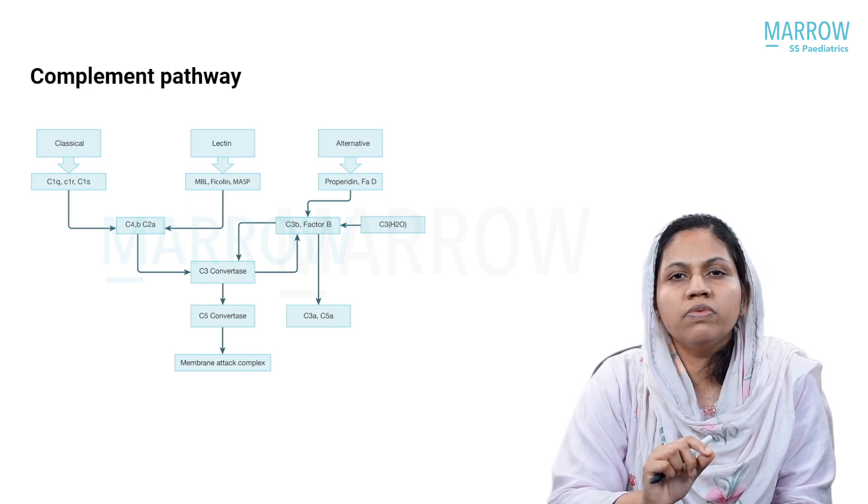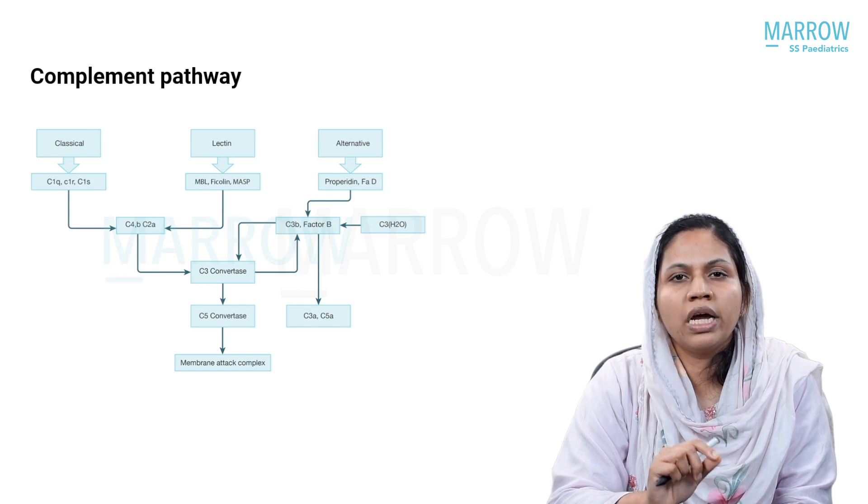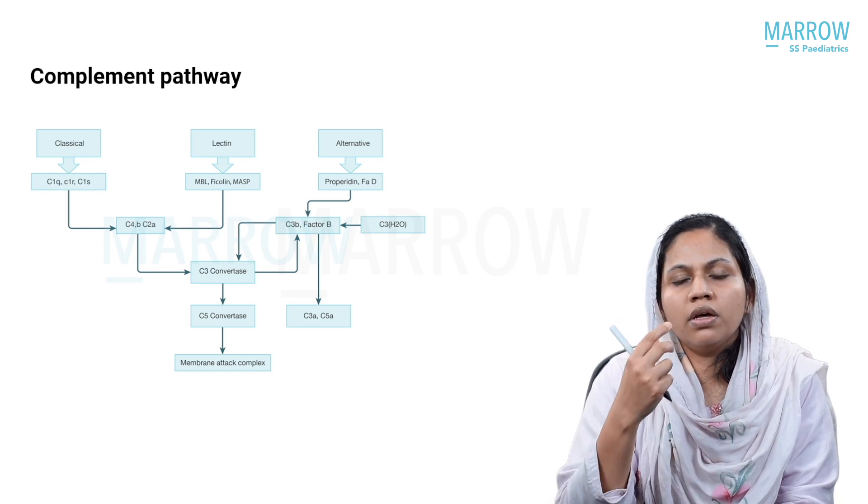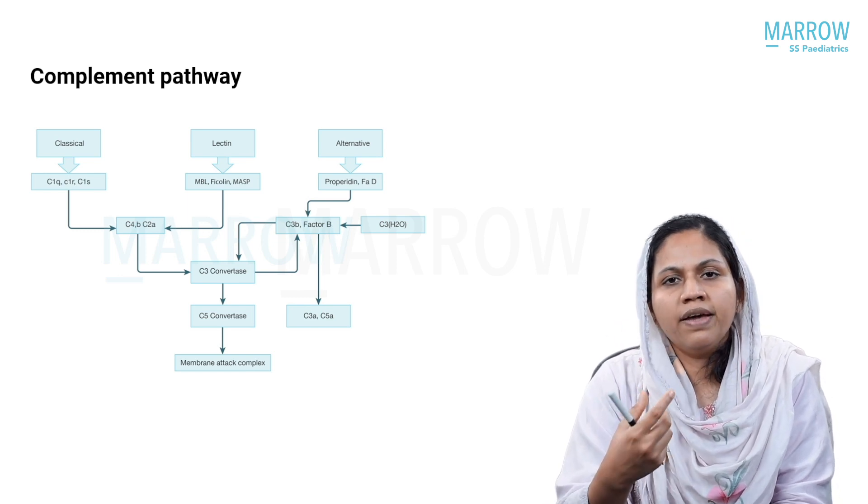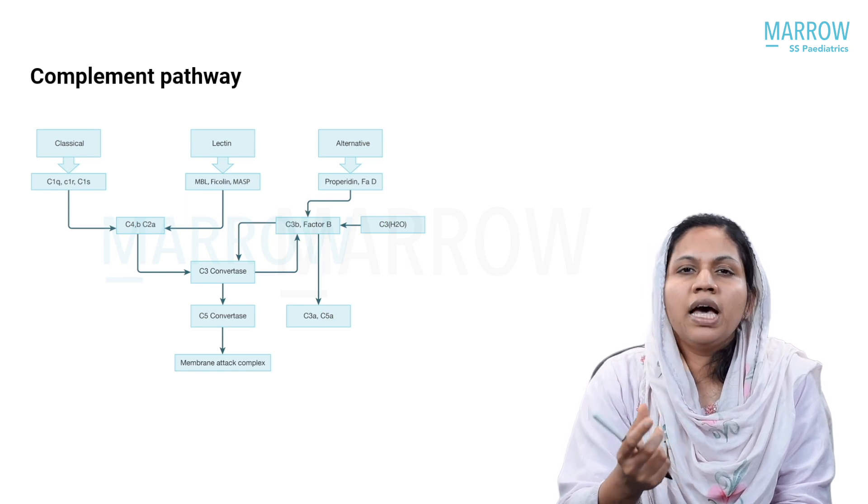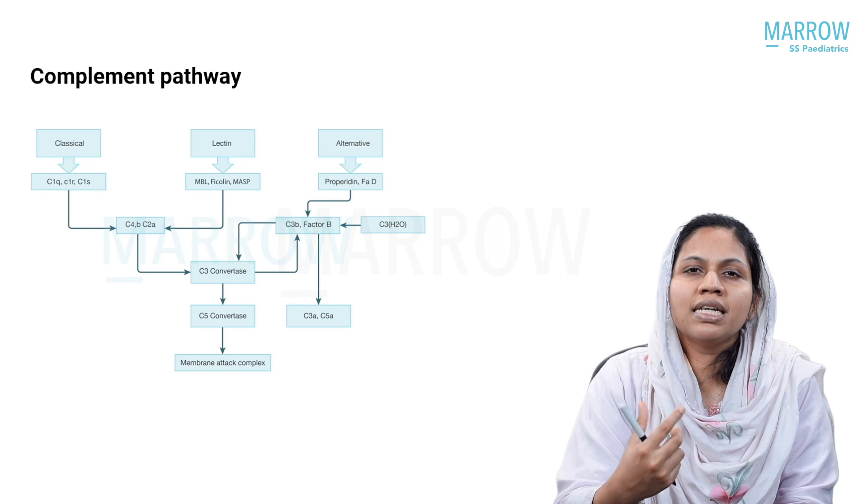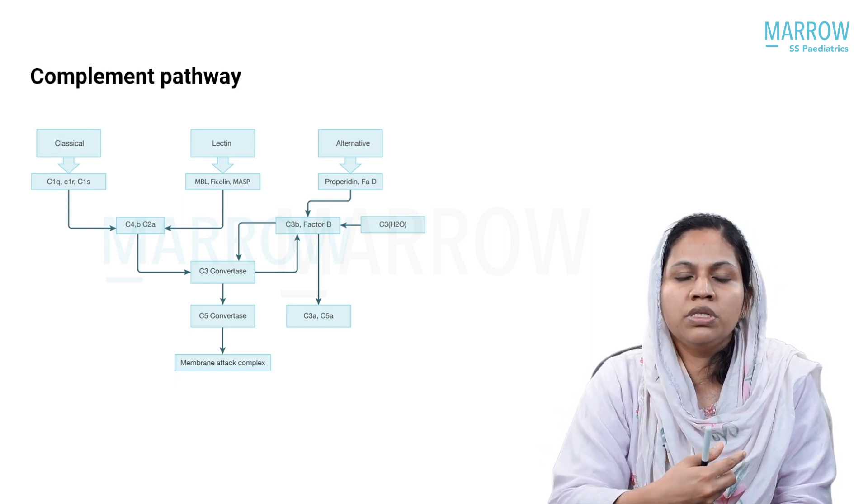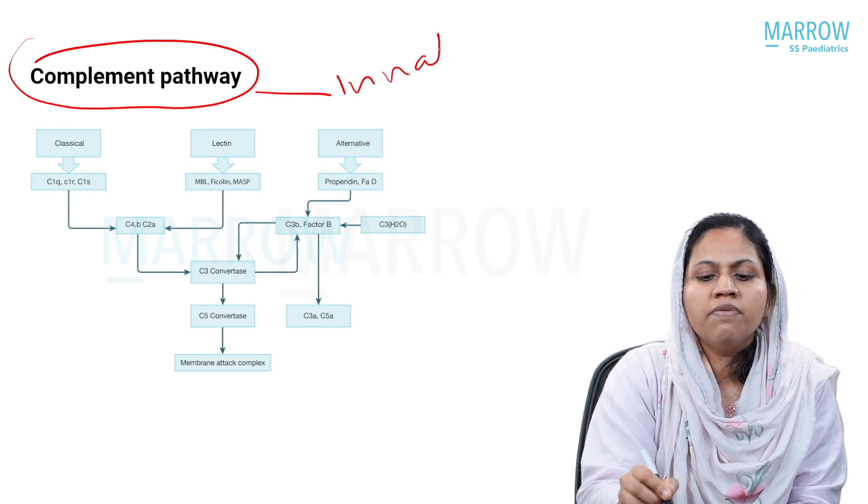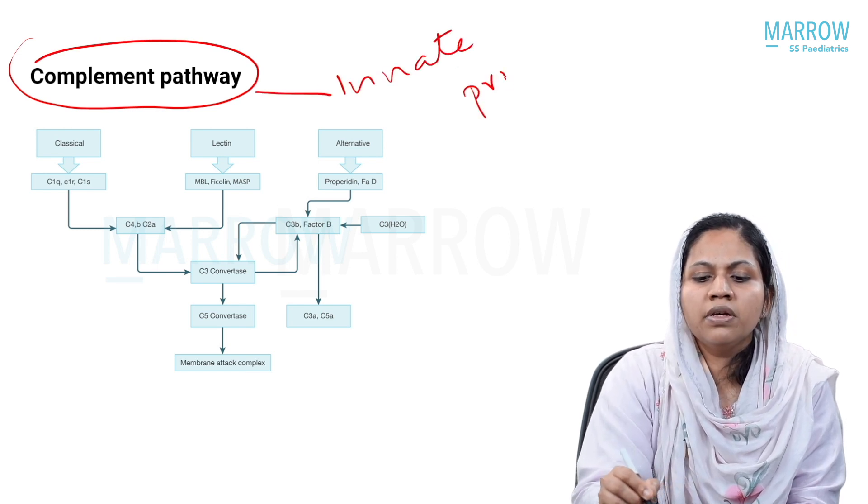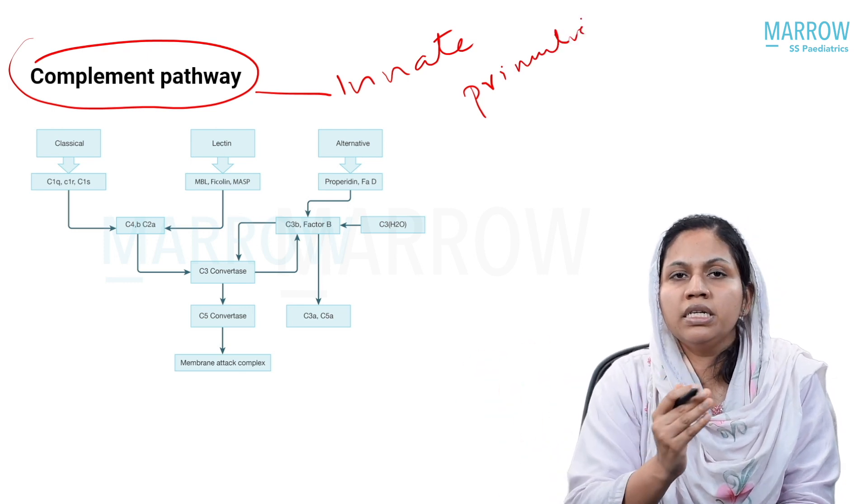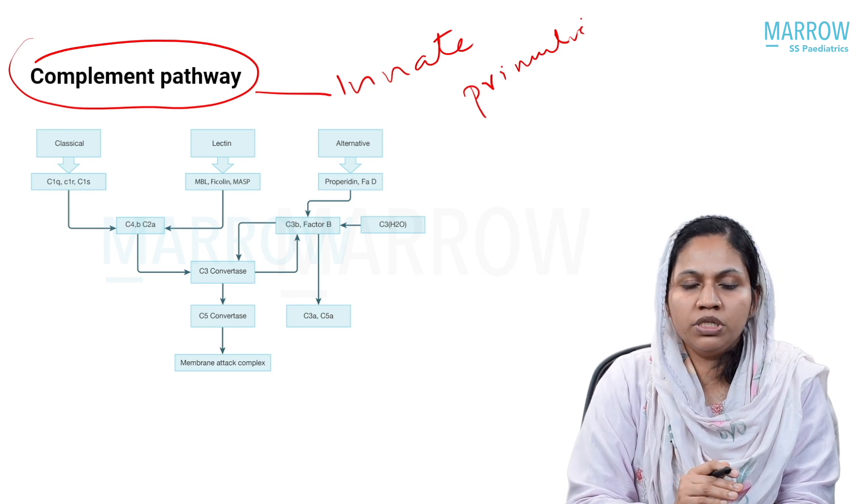Because this is one of the most important pathways which has problems when it comes to childhood TMA or childhood HUS. So just a recap of what we have learned in our immunology and microbiology classes. We know that we have two types of immunity: innate immunity and adaptive immunity. Complement pathway is a part of our innate immunity.